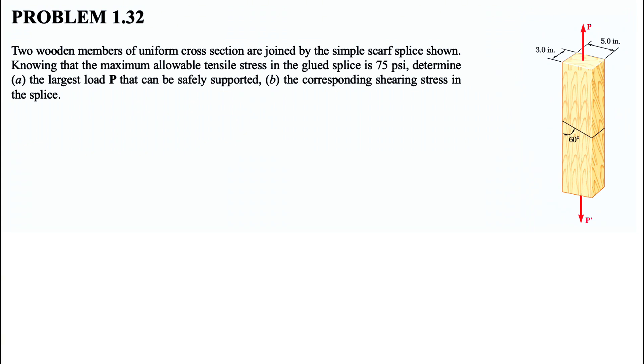We're going to be solving question 32 from the first chapter of the Beer and Johnson textbook, Mechanics and Materials. We have two wooden members of uniform cross-section that are joined by the simple scarf splice. We know that the maximum allowable tensile stress in the glued splice is 75 PSI. So we have the maximum of the tensile stress, which will be 75 PSI, as the first given.